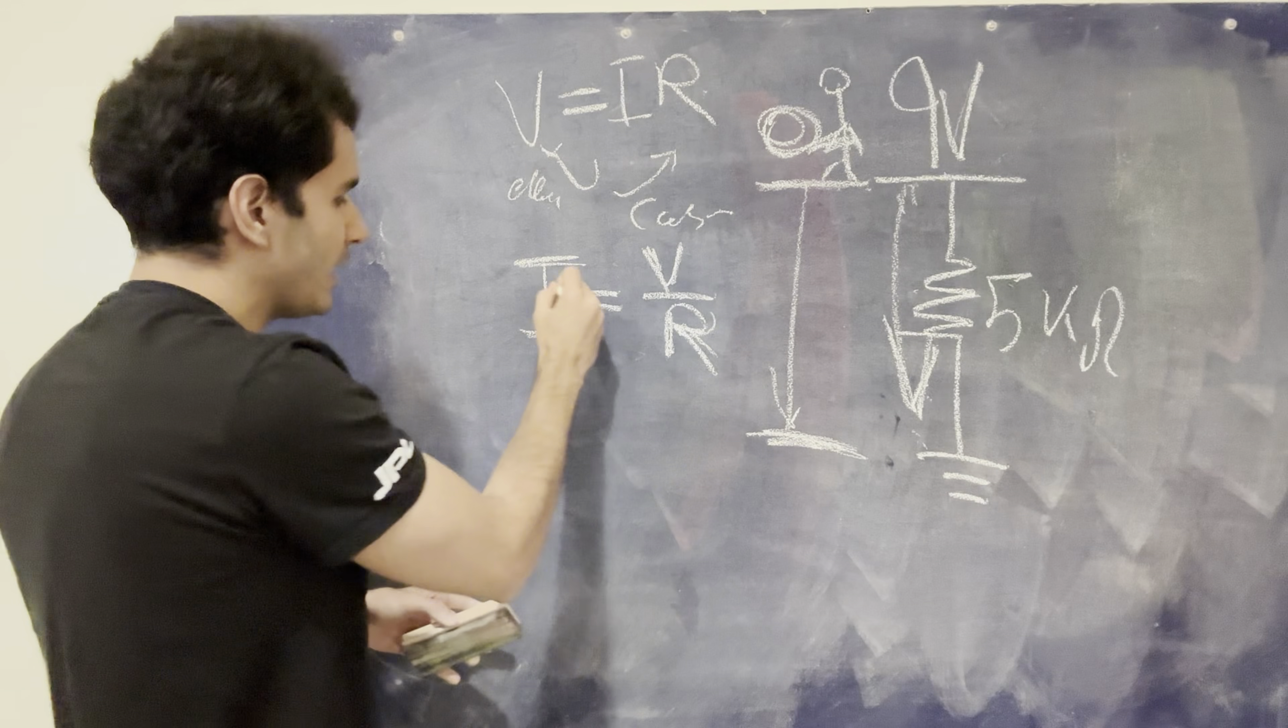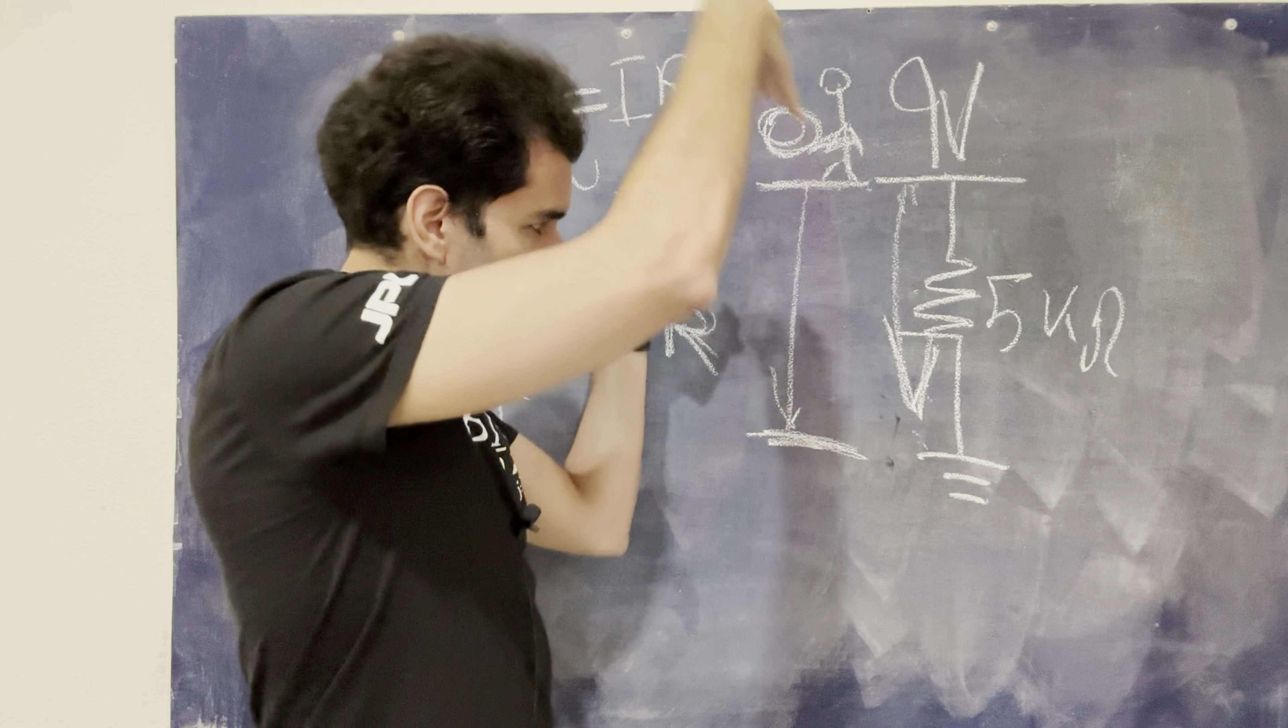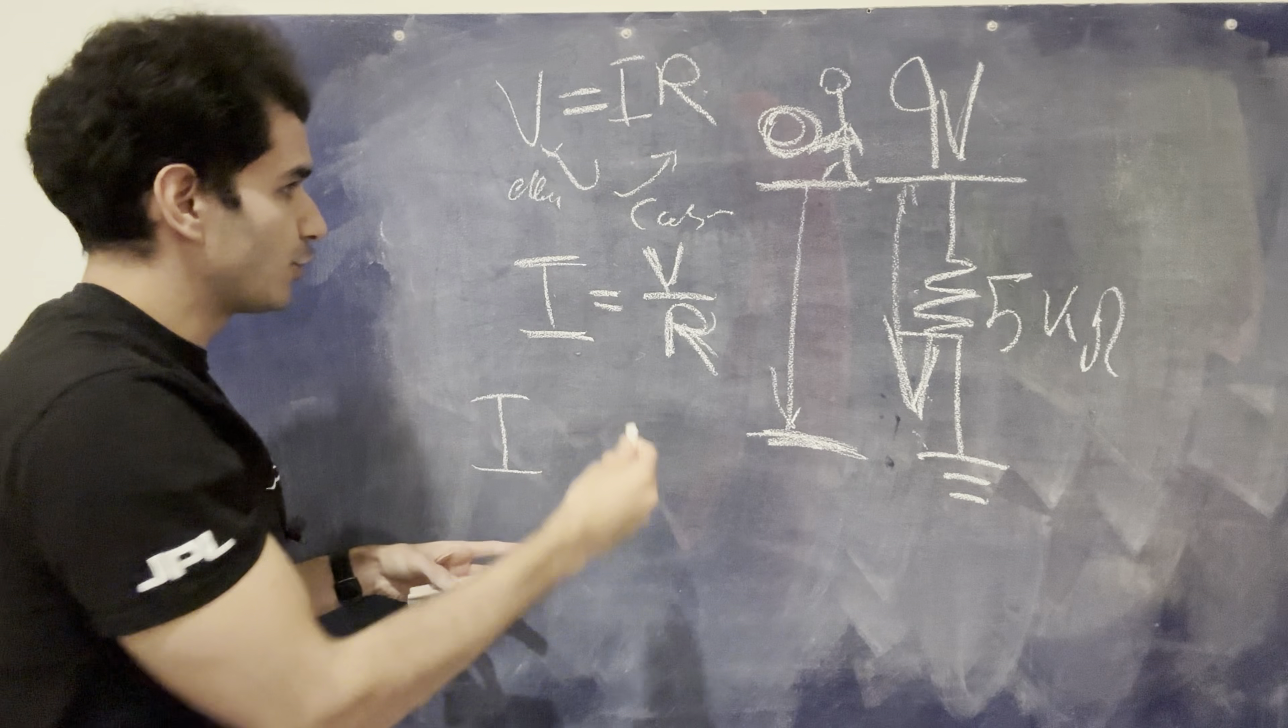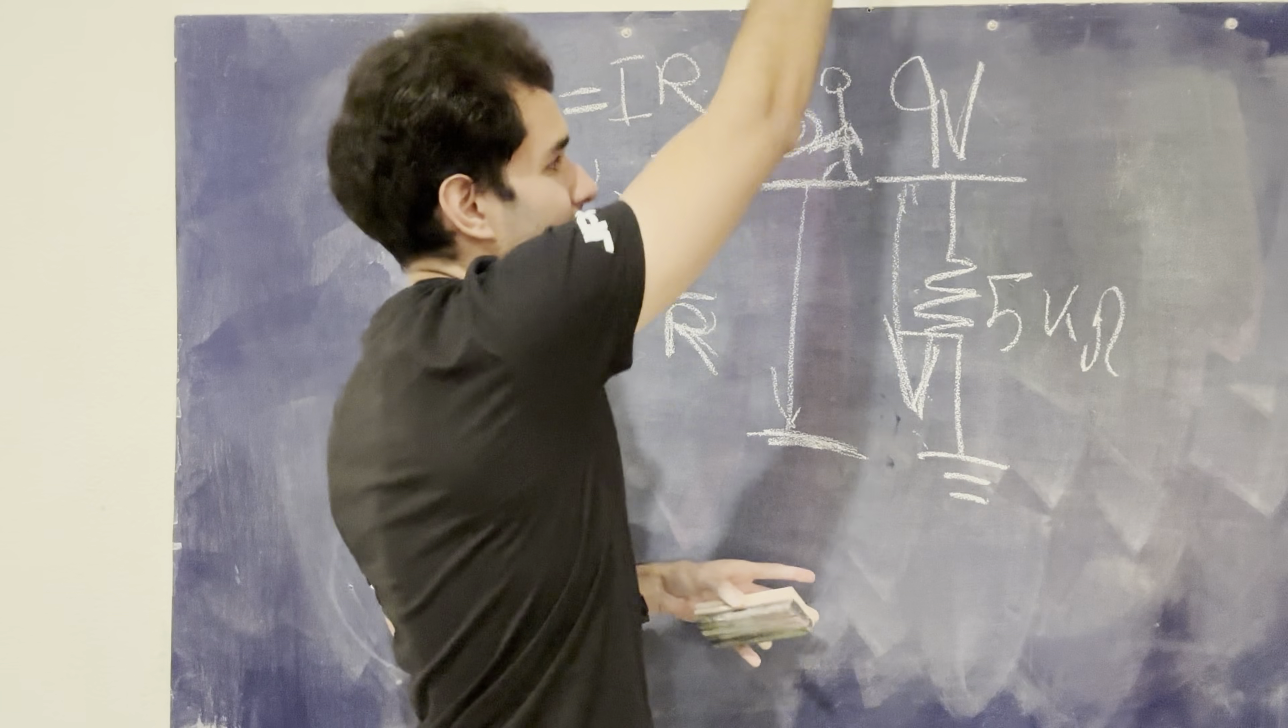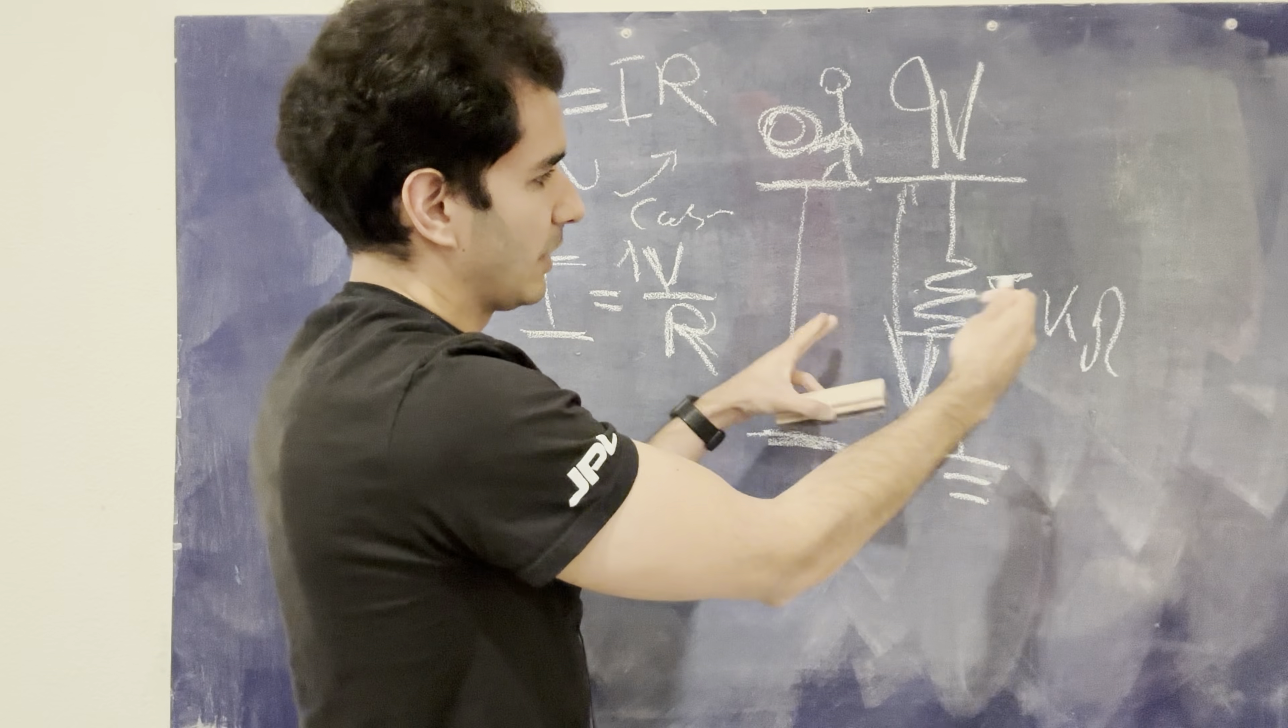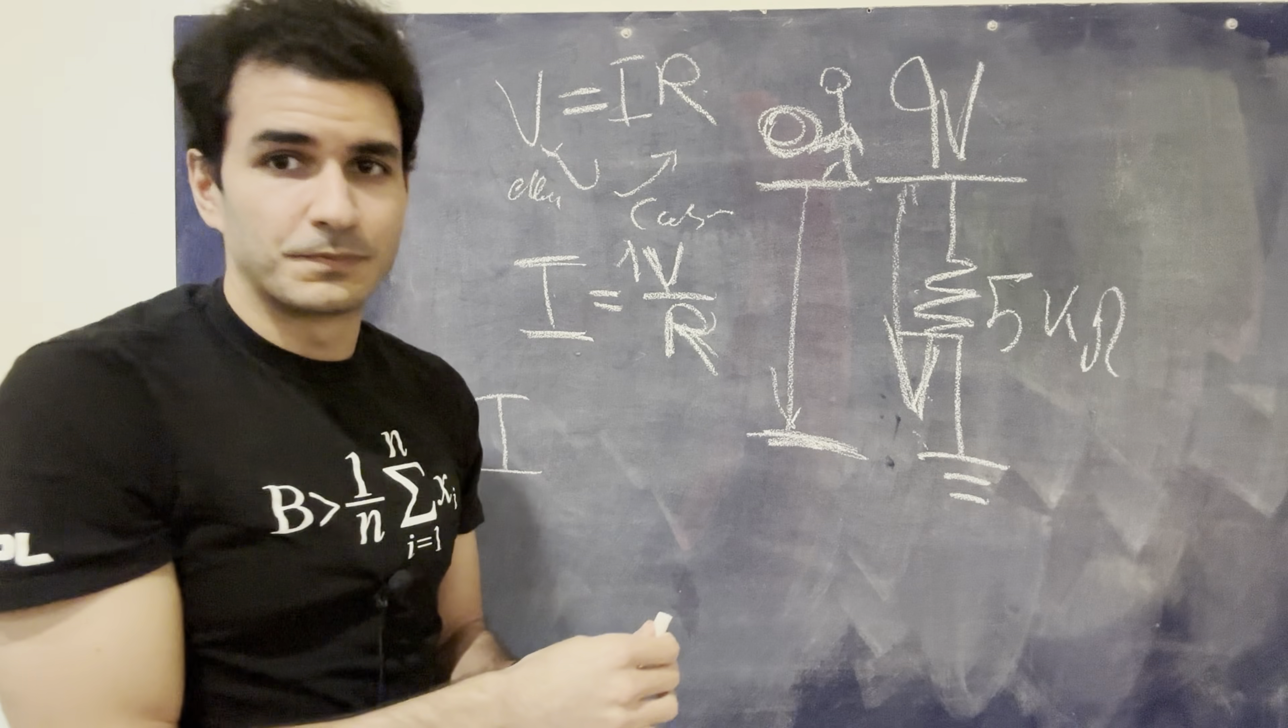And hence, the way I can calculate current, I can think of current as basically like the energy going downstream. If I want to have more energy, I can do two things. I can either increase the potential, meaning I can increase the height of this thing, or I could basically reduce the resistance, meaning I could make this path have a little less friction, right?